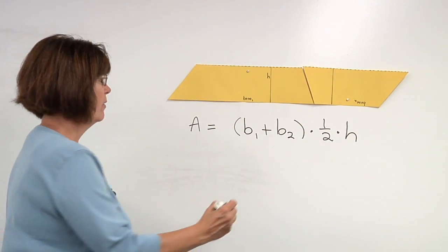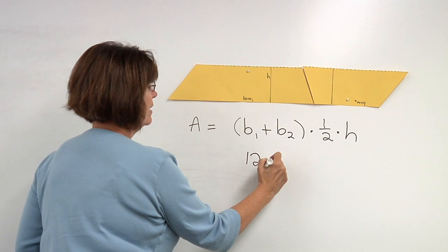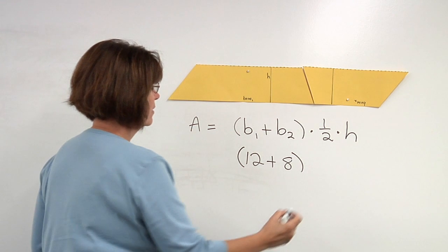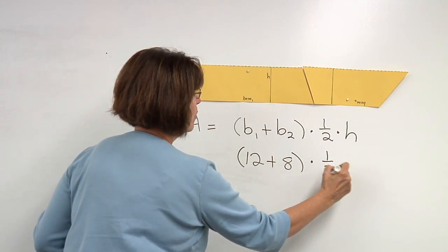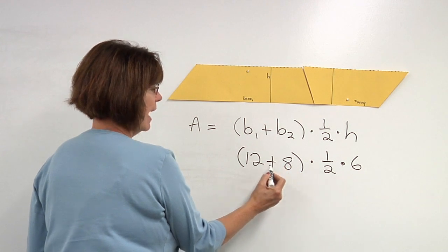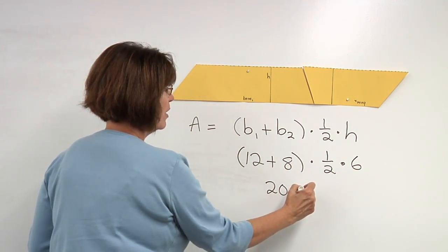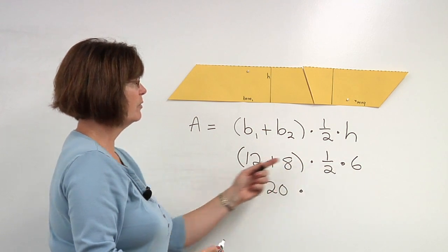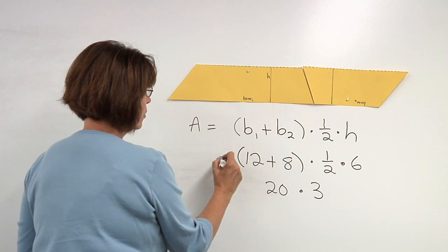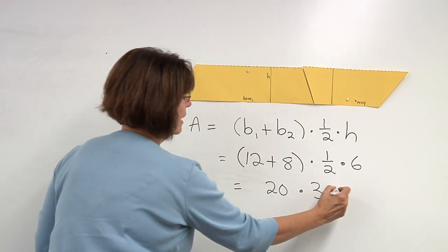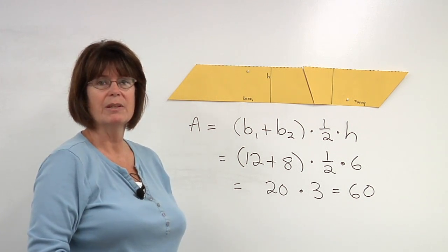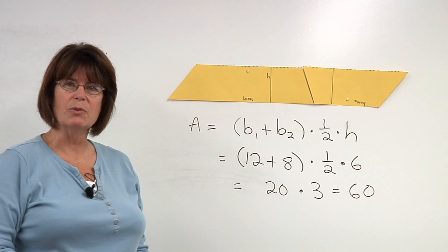If base 1 were 12 and base 2 were 8 and the height of the original trapezoid was 6, then we would need to take 12 plus 8, the two bases, add those together, 20, and then multiply times half of the original height. Original height 6, half of it is 3, so 20 times 3 gives us an area of 60 for our trapezoid. That's how to find the area of a trapezoid.